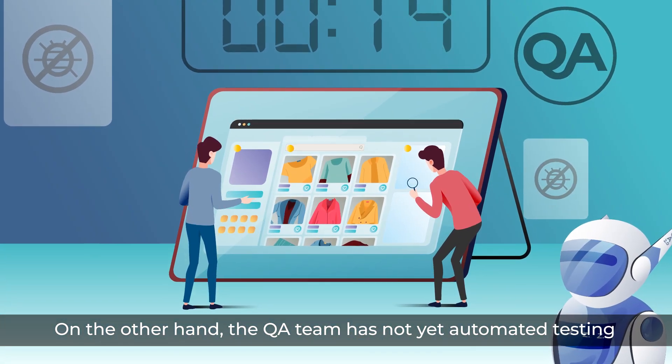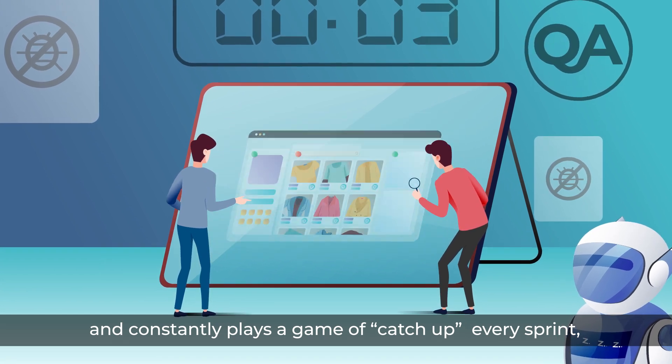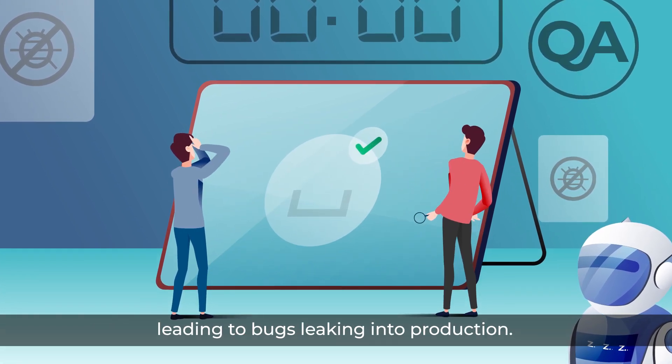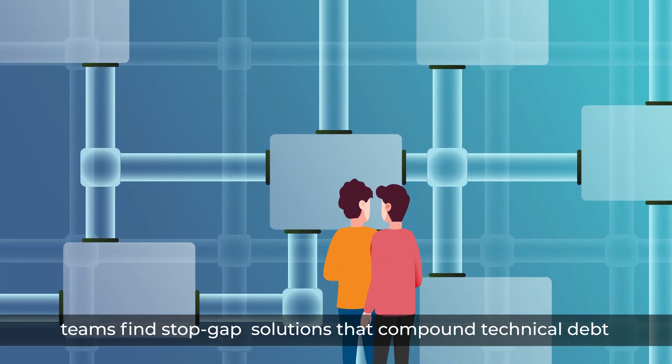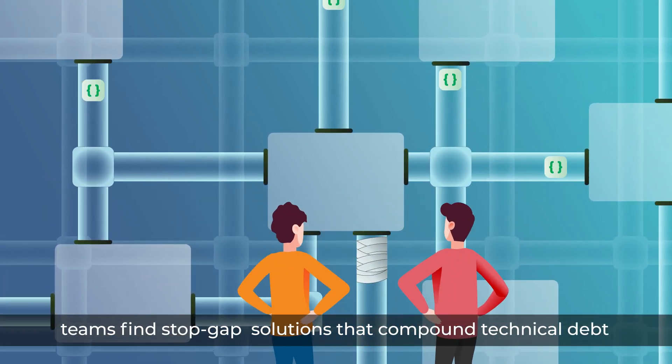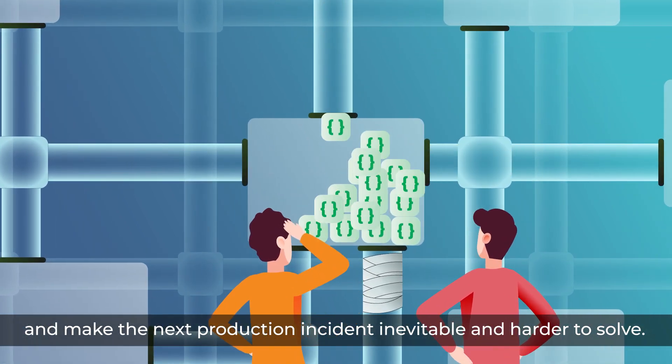On the other hand, the QA team has not yet automated testing and constantly plays a game of catch-up to every sprint, leading to bugs leaking into production. So whenever the system breaks as it has today, teams find stopgap solutions that compound technical debt and make the next production incident inevitable and harder to solve.